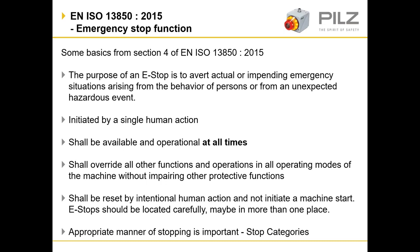Emergency stops shall override all functions and operations in all operating modes of the machine without impairing other protective functions. For example, guard switches may be bypassed to allow for slow speed, machine jogging or setup, but the e-stop must always be operational and available to override all other functions.